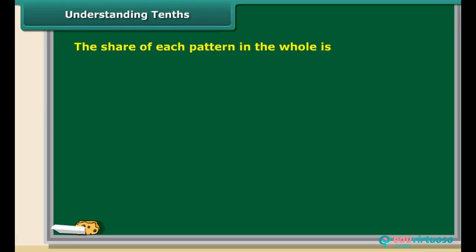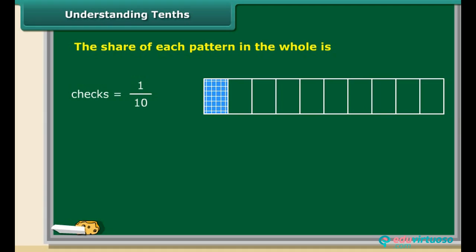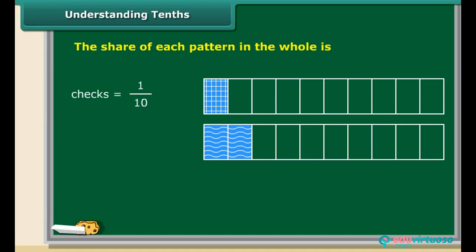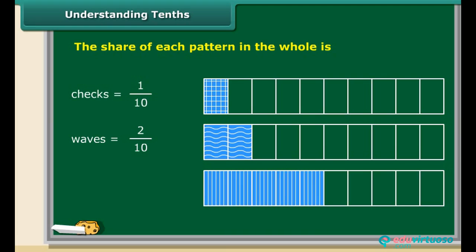Consider the fraction bars. In the first bar, only 1 out of the 10 blocks has checks. In the second bar, only 2 out of the 10 blocks have waves. Similarly, in the third bar, 5 out of the 10 blocks have stripes. In all these cases, we express the share of the 10 blocks to the total blocks as a fraction with denominator 10. Such fractions are called tenths.